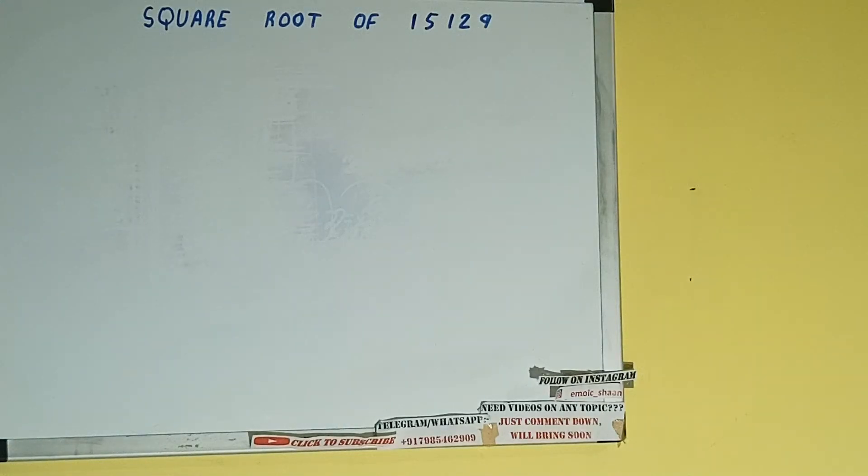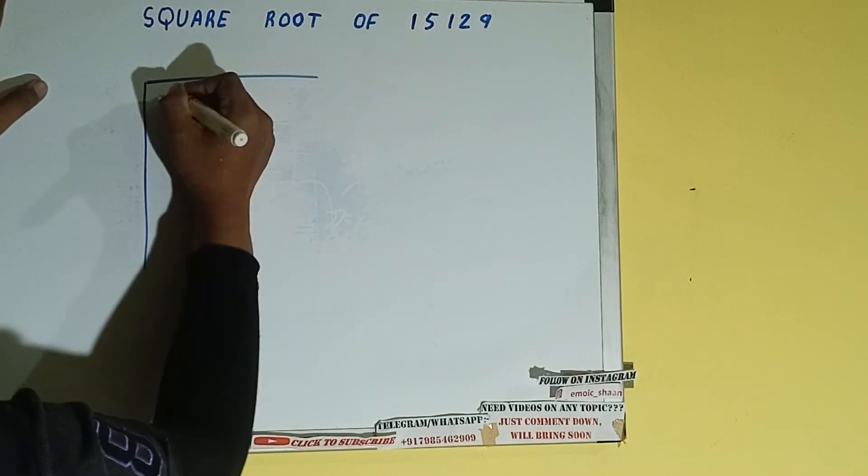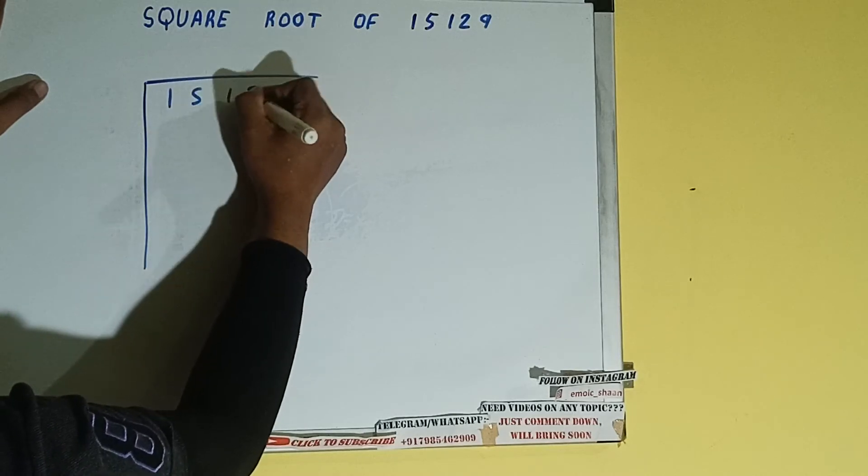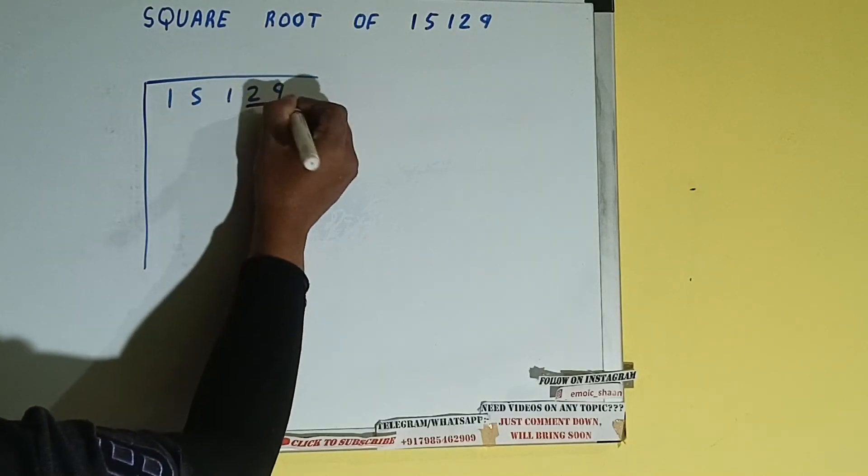Hello friends, in this video I'll be helping you with the square root of the number 15129. So let's start. First of all, we need to write the number like this: 15129. Next thing we need to do is form pairs from the right-hand side. So one pair will be this, one pair will be this, and this one will be left out.